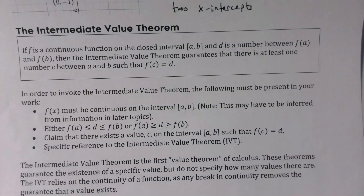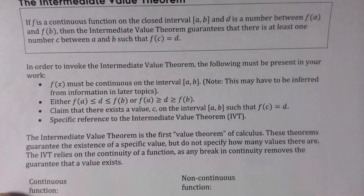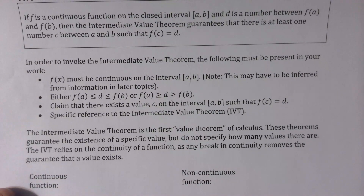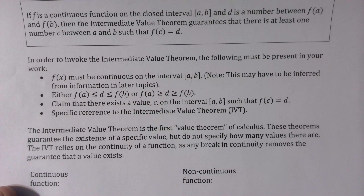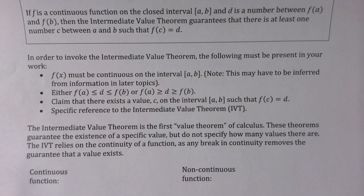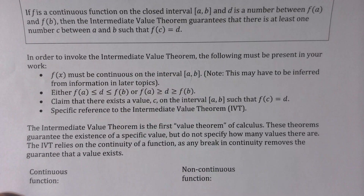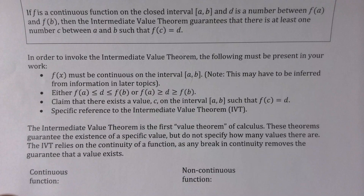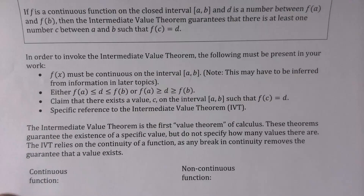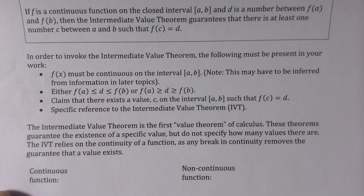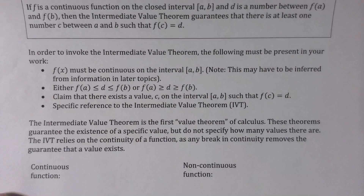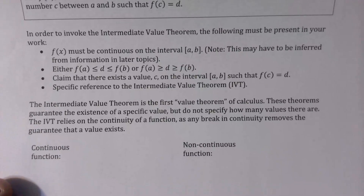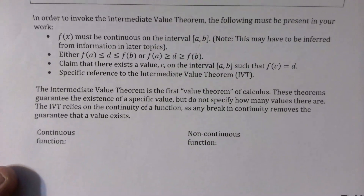That's really the visual of what we're describing with the Intermediate Value Theorem. If f is a continuous function on the closed interval [a, b], and d is some number in between f(a) and f(b), then the IVT guarantees that there's at least one value c on the interval [a, b] where f(c) = d. Whenever we reference this, we do have to specifically reference the IVT. It's the first of three value theorems in this calculus course — they guarantee the existence of a value, not necessarily how many. Any break in continuity removes that guarantee.